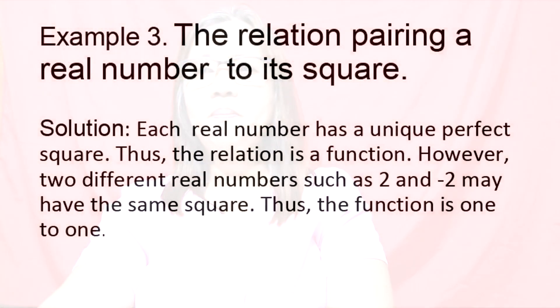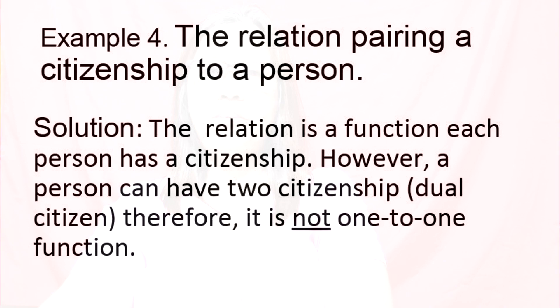Example number three: the relation pairing a real number to its square. Solution: each real number has a unique perfect square. Thus, the relation is a function. However, two different real numbers such as 2 and negative 2 may have the same square. Thus, the function is not one-to-one. Example number four: the relation pairing a citizenship to a person. Solution: the relation is a function — each person has a citizenship. However, a person can have two citizenships (dual citizen). Therefore, it is not a one-to-one function.